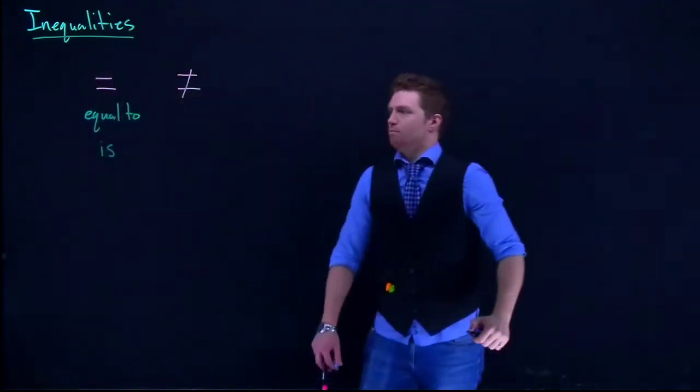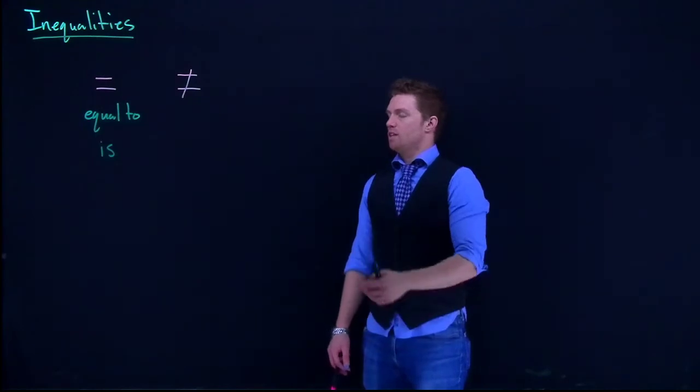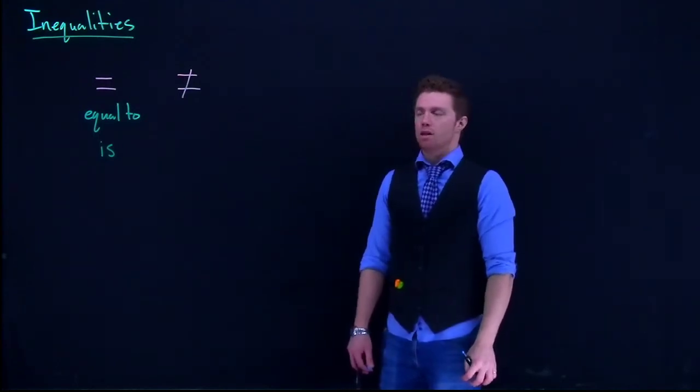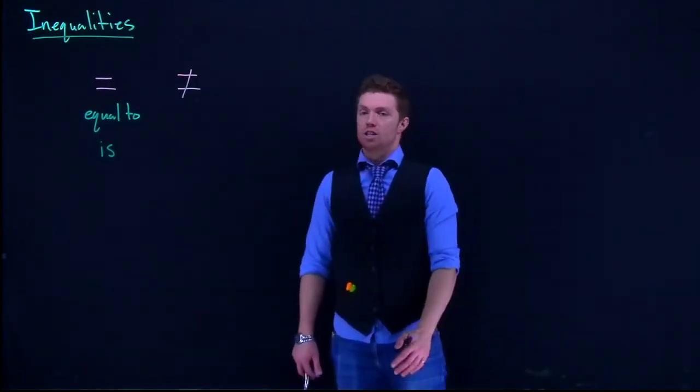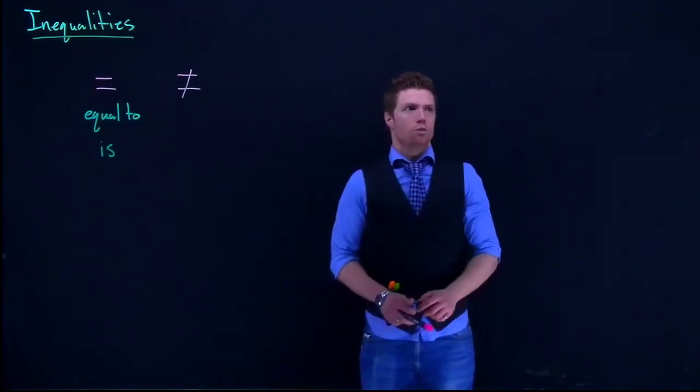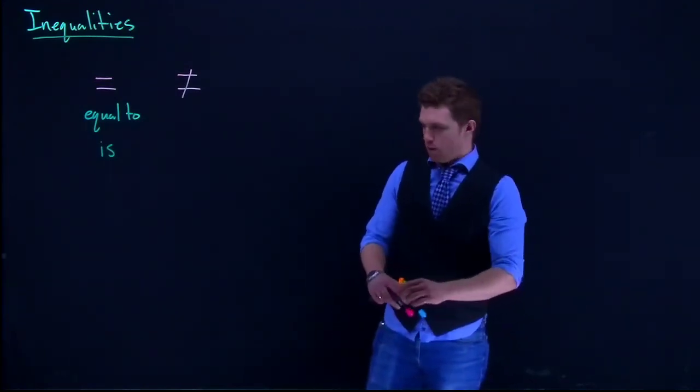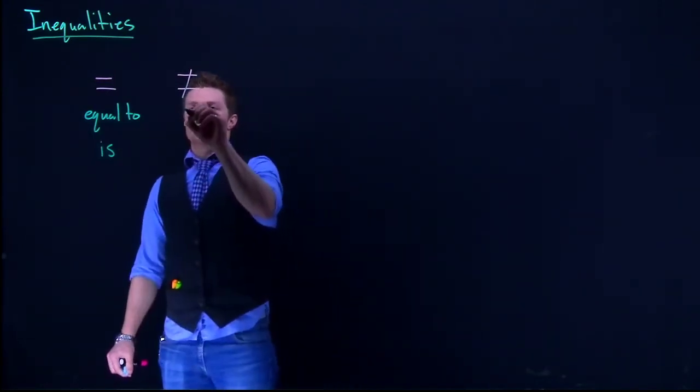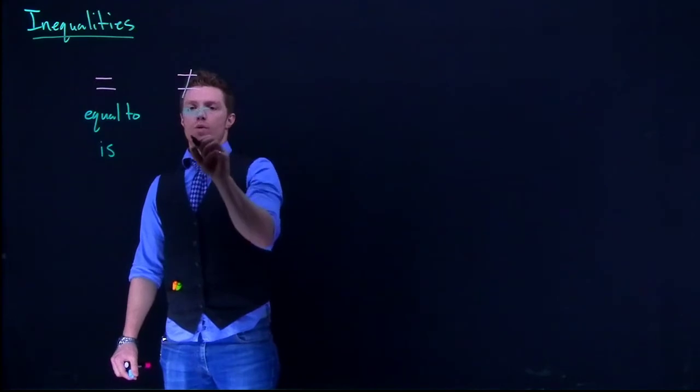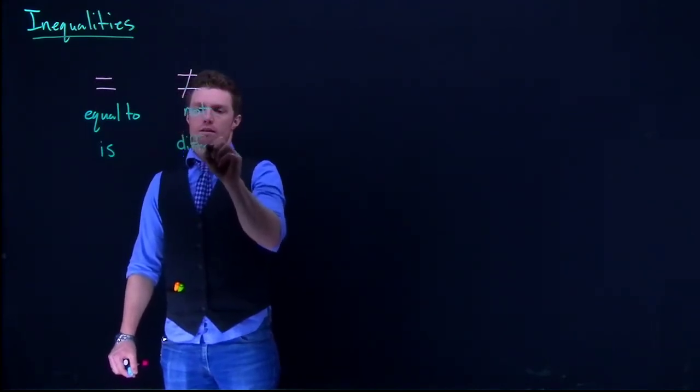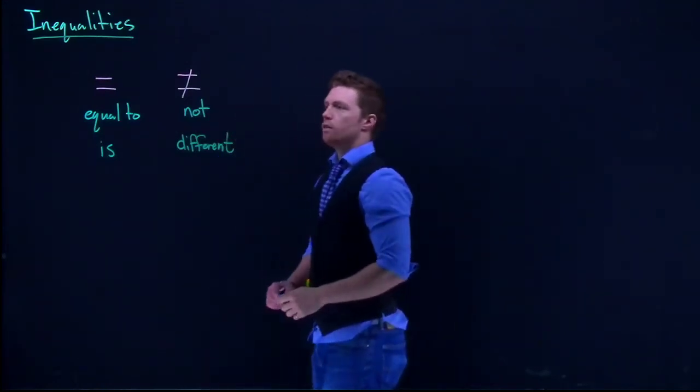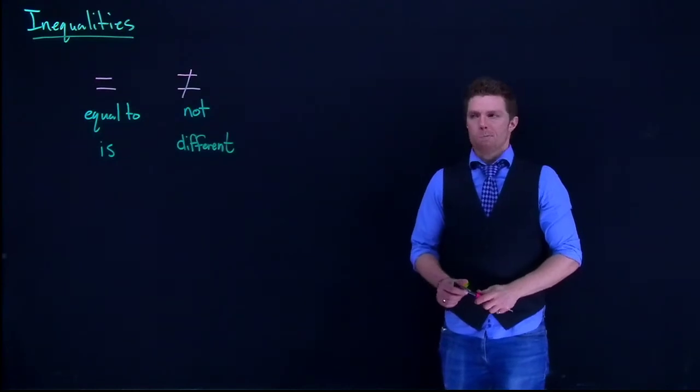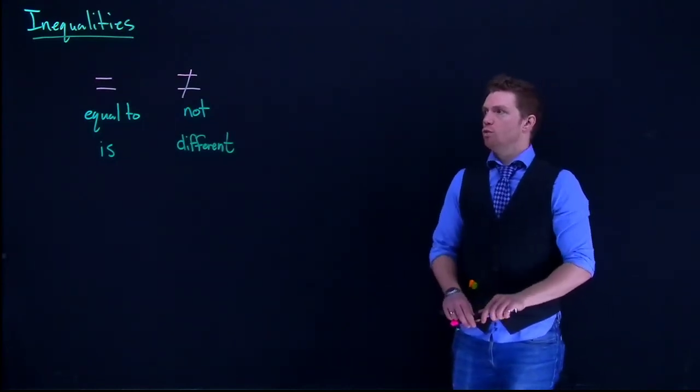So we can say the QBR of the quarterback during the football game is 92, and that would be a way to use an equal symbol. For not equals, some key phrases that pop up are words like not, or the words different. If you see either of those, it's a good chance that we're dealing with the inequality of not equal to. So those are our two basic ones.